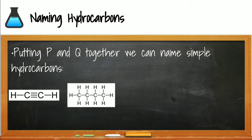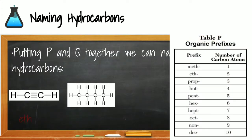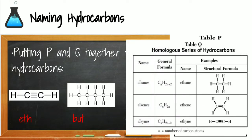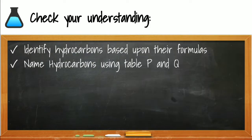Let's see if we can put these two together. In the first structure, there are two carbons, so the prefix is eth. In the second structure, there are four carbons, so the prefix is but. The first structure has a triple bond, and looking at reference table Q, triple bonds are alkynes ending in -yne — so this is called ethyne. In the structure with four carbons, all carbons have single bonds, so the single bond suffix gives us butane.